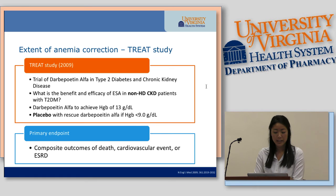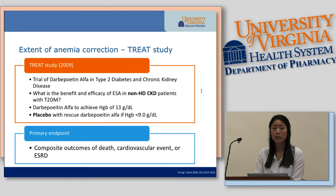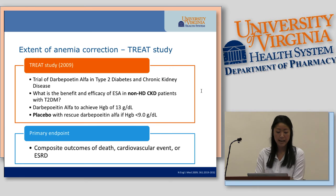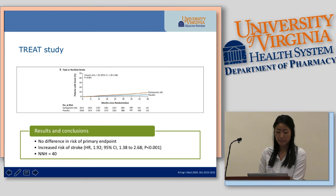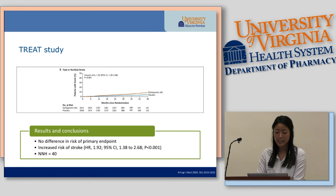Previous studies like CREATE and CHOIR suggested the impact of anemia correction might not be as favorable. TREAT — the Trial of Darbepoetin Alpha in Type 2 Diabetes and Chronic Kidney Disease — was the first study using a placebo, looking at the benefit and efficacy of ESAs in CKD patients not on hemodialysis. The first arm received darbepoetin alpha targeting a hemoglobin of 13; the placebo arm received rescue darbepoetin only when hemoglobin dropped below 9. They examined composite outcomes of death, cardiovascular event, or end-stage renal disease. Results showed no difference in risk of the primary endpoint, but an increased risk of stroke with a number needed to harm of only 40. After this study, prescribing of erythropoietin-stimulating agents actually reduced by 35%.